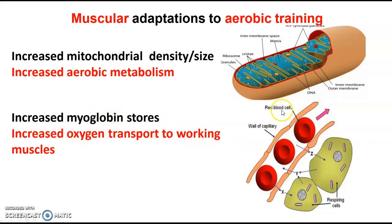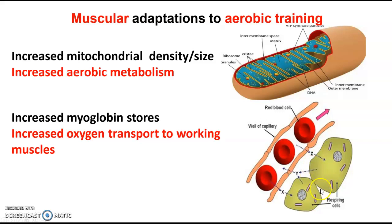Within the haemoglobin here, we have oxygen and it's transported into myoglobin into our muscle cells. What we're getting is an increased store of myoglobin in the muscle, which means we can transfer and diffuse oxygen into the working muscles and allow us to perform aerobically for longer. Two things: an increase in mitochondrial density and size, and an increase in myoglobin stores — both of these allow us to perform aerobically for longer before we reach fatigue.